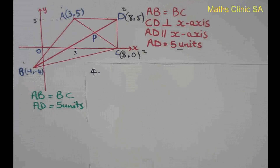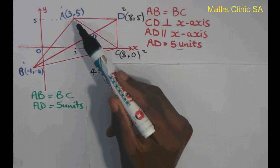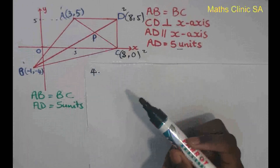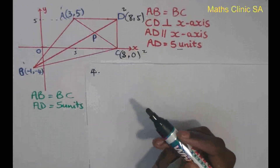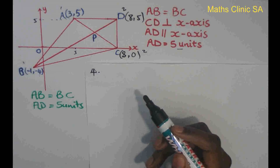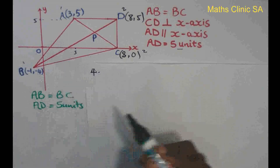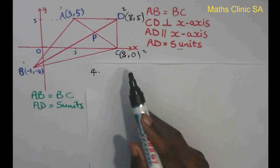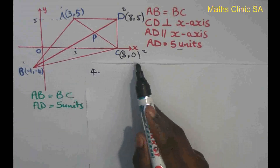The question is: I am going to write a line of AC. I am going to write the coordinates of AC: point (3, 5) and point (8, 0).